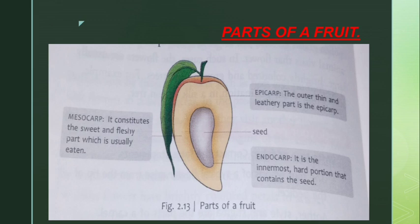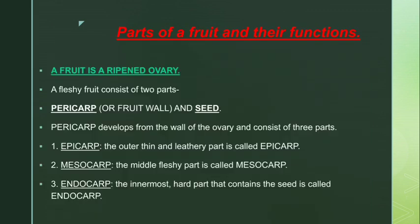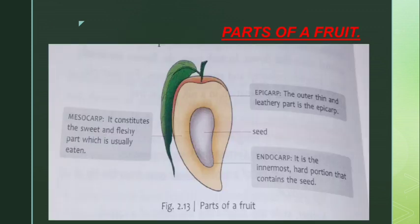The second part of the pericarp is the mesocarp — the middle fleshy part. The yellow portion of the mango that we eat, which is very sweet and tasty, that is the mesocarp. It constitutes the sweet and fleshy part which is usually eaten.